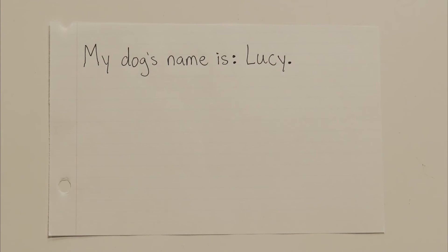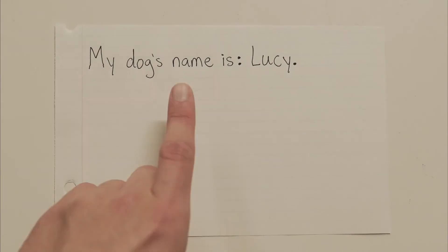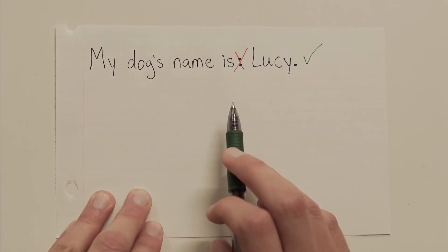My dog's name is: Lucy. Okay. So, remember, the first thing we always need to check is whether or not we have a complete sentence before the colon. Do we? Is my dog's name is a sentence? No, it's not. So, right off the bat, we know that this sentence is not correct. There should not actually be a colon in this sentence. You should just say, My dog's name is Lucy. Period.